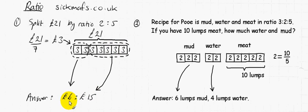So that's my answer. 6 pounds to 15 pounds is basically splitting 21 pounds in the ratio 2 to 5. 2 parts is the 6 pounds, 5 parts is equal to the 15 pounds.